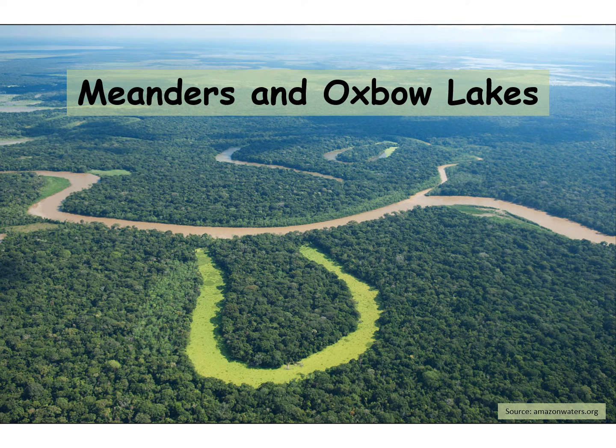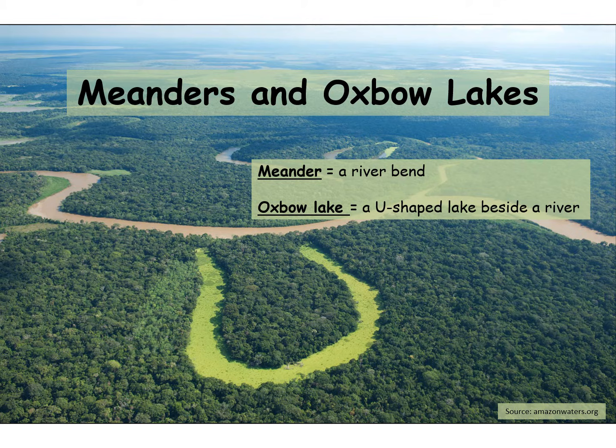This session is on meanders and oxbow lakes. A meander is a river bend, and an oxbow lake is a U-shaped lake beside a river. Here at the front of this image, this is the oxbow lake standing separate from the river.